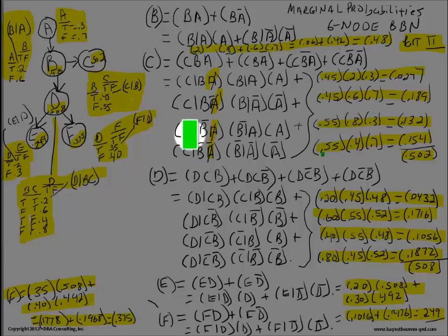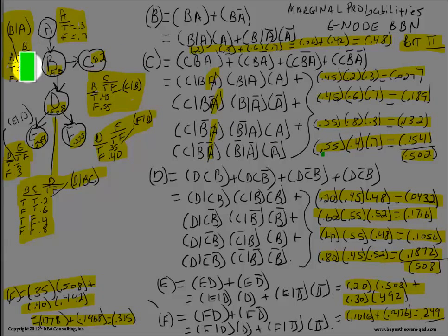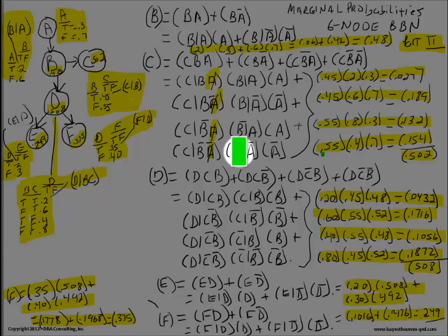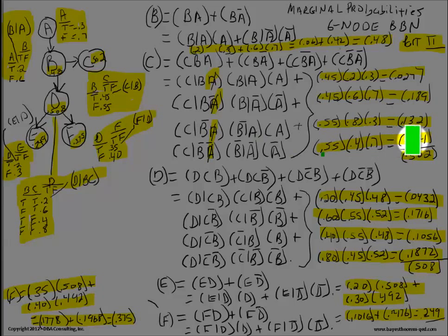Probability of C given not-B is 0.55, times probability of not-B given A which is 0.8, times probability of A which is 0.3. Multiply these together, get 0.132. And lastly, probability of C given not-B is 0.55, times probability of not-B given not-A which is 0.4, times probability of not-A which is 0.7. Multiply these together, get 0.154. Add all four terms up and you get 0.502 — the marginal probability for C.